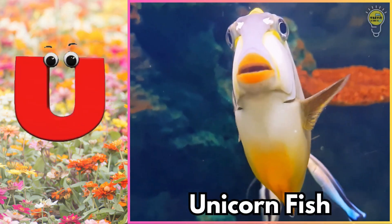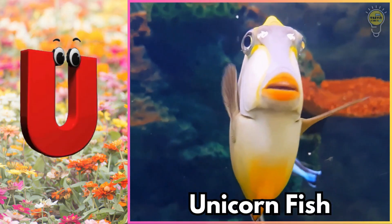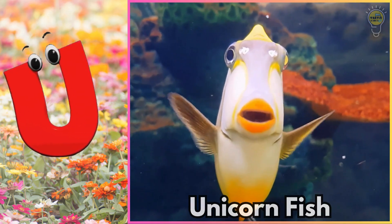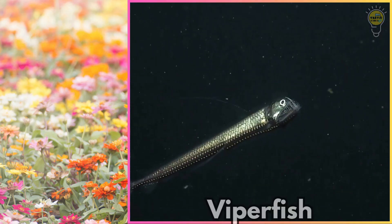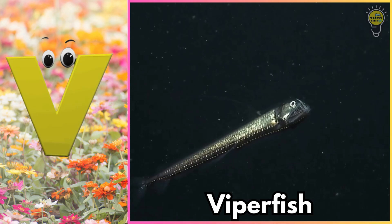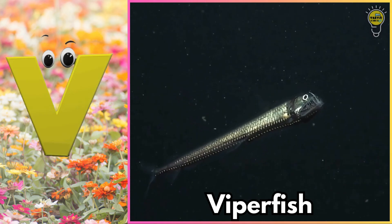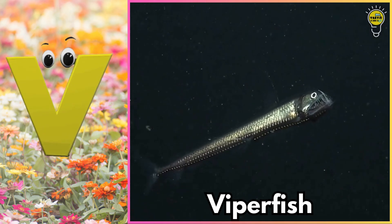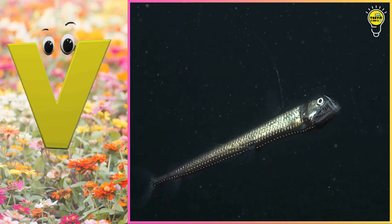U is for unicornfish. U, unicornfish. V is for viperfish. V, viperfish.